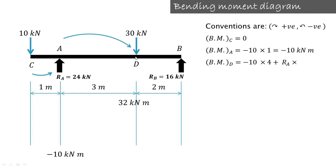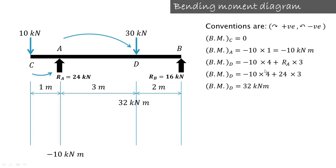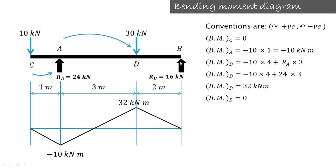For bending moment at point D, consider all forces on the left hand side of D. The 10 kilonewton force produces anticlockwise moment at distance 4 (1 plus 3), giving minus 10 into 4 equals minus 40. Ra produces clockwise moment at distance 3, giving plus 24 into 3 equals plus 72. So bending moment at D equals 72 minus 40 equals 32 kilonewton meter. Bending moment at point B is 0. So the values are: C = 0, A = minus 10, D = 32, B = 0 kilonewton meter.